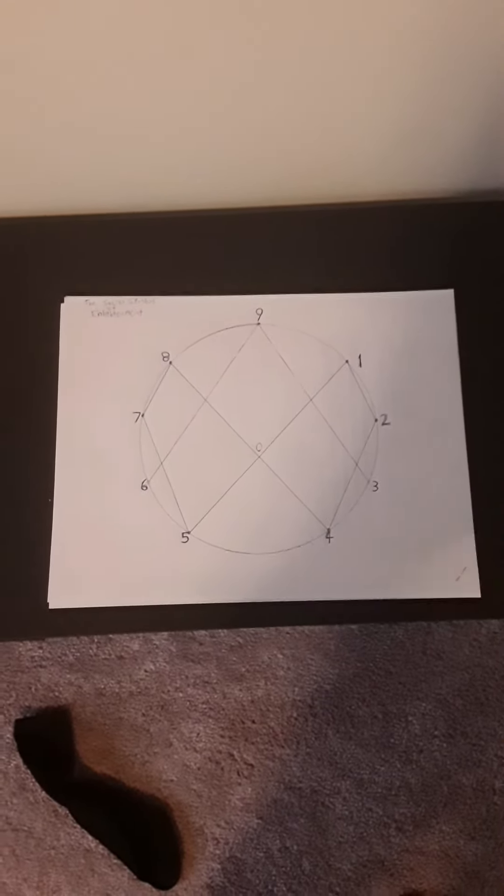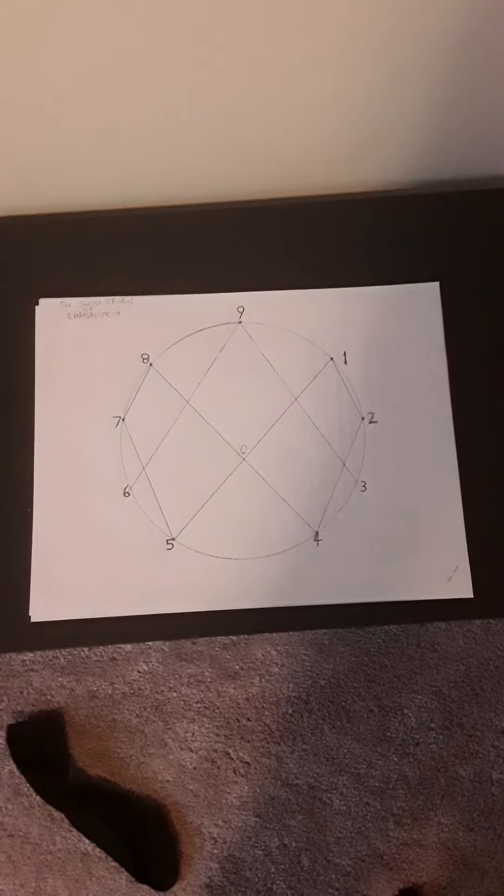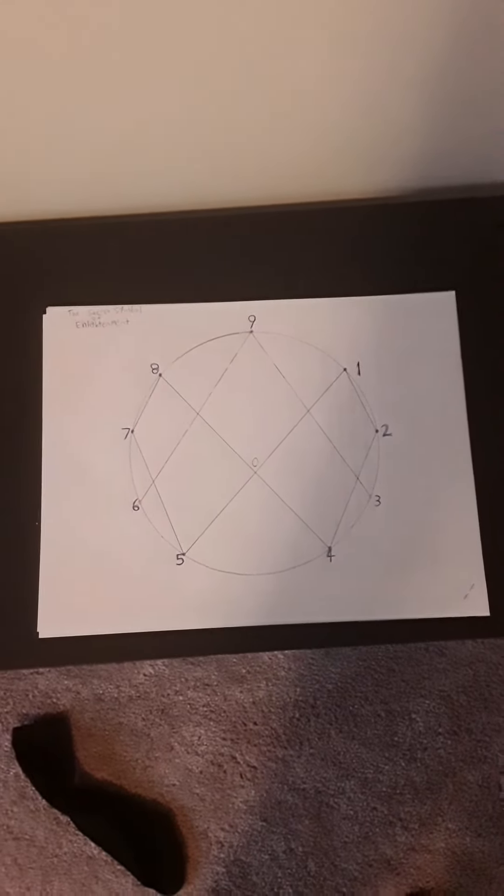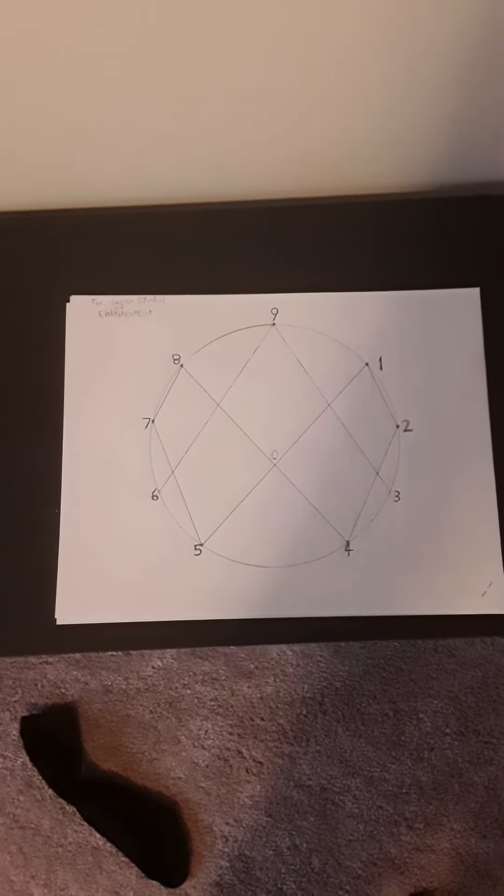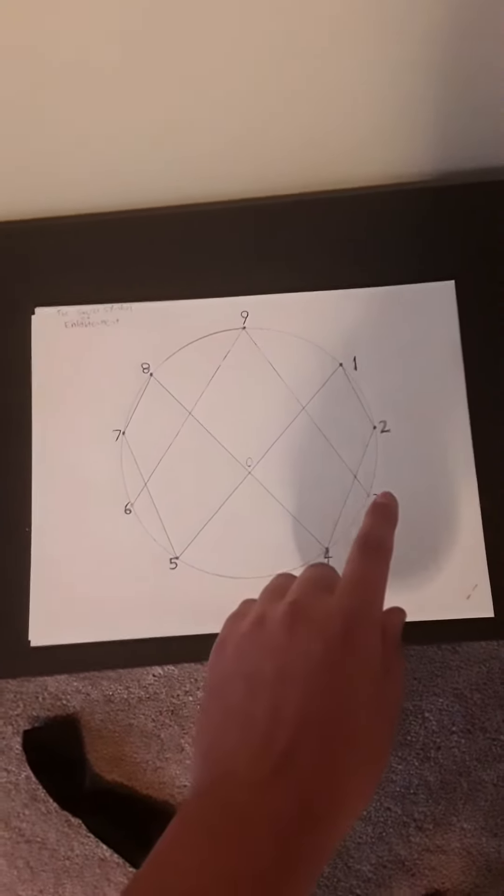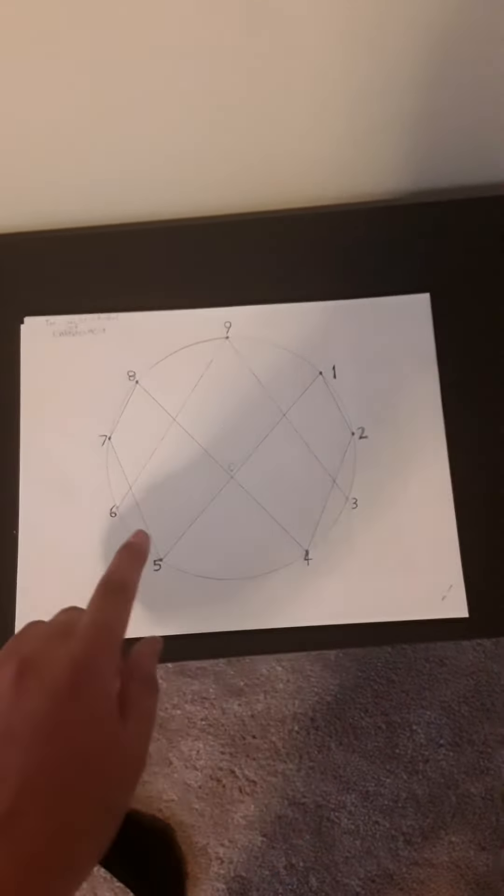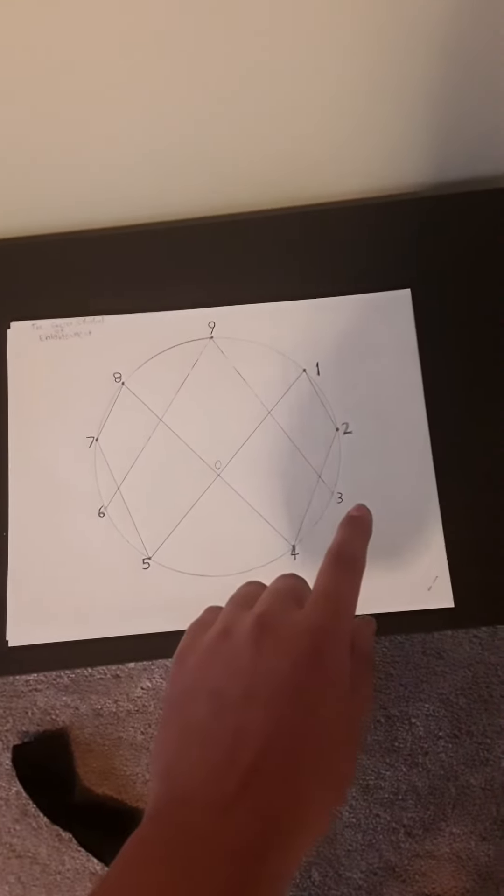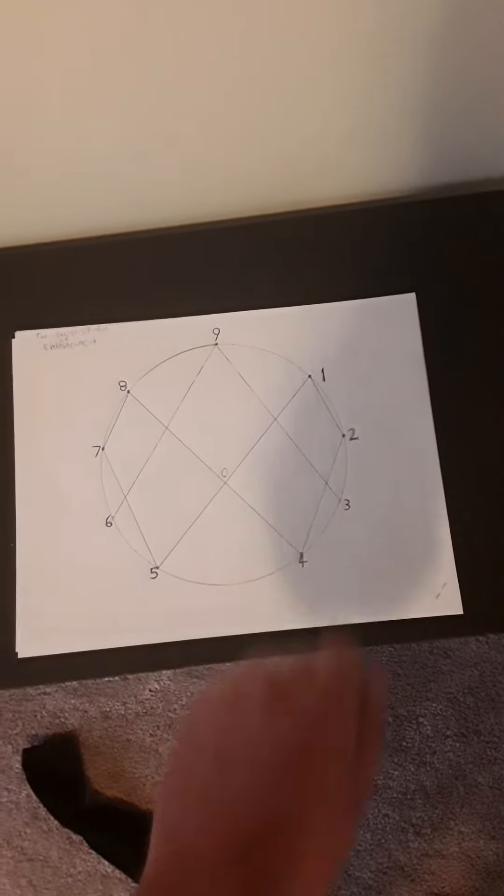So what's the 3-6-9? You notice 3-6-9 wasn't in that doubling sequence. If you follow three and six, three doubled is six, six doubled is 12 but 1+2 is three. 12 doubles is 24, but 2+4 is six. 24 doubles is 48, 4+8 is 12, and 1+2 is three.